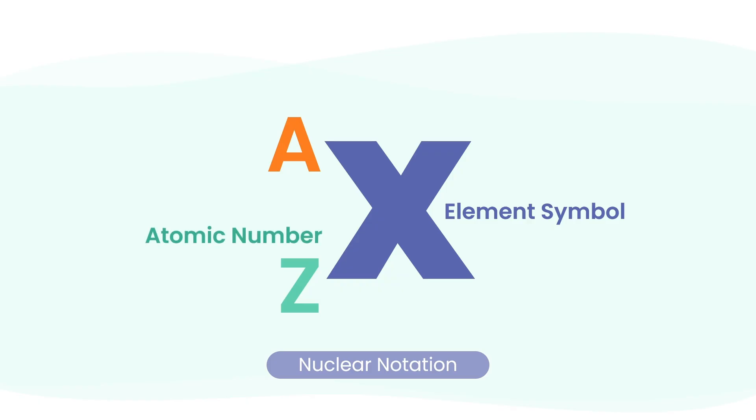Z is the atomic number, which tells us how many protons the atom has. And A is the mass number, the total number of protons and neutrons in that atom.